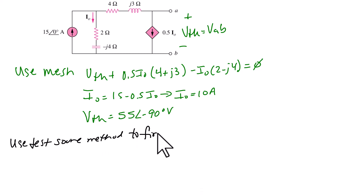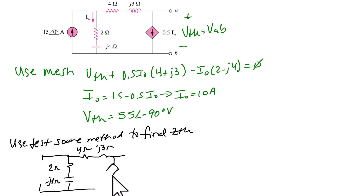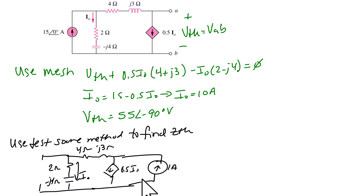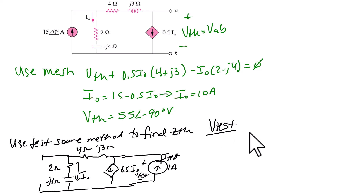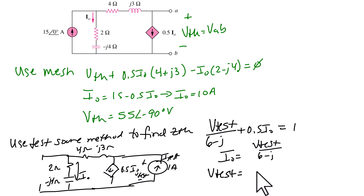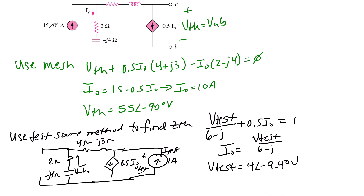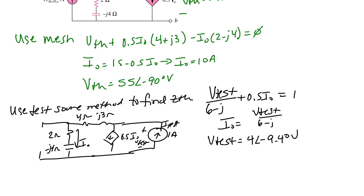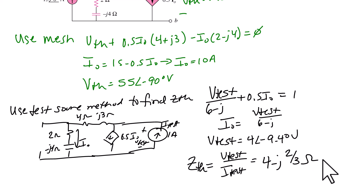Next we use the test source method to find Z Thevenin, turning off the independent current source. The circuit has a (2 minus J4) ohm branch with I_0, a J3 branch, and dependent source 0.5I_0. We add a test current source with voltage V_test across it. Using KCL: V_test/(6 minus J) + 0.5I_0 = 1, with constraint I_0 = V_test/(6 minus J). Solving gives V_test = 4 angle negative 9.4 degrees, so Z Thevenin in rectangular form = 4 minus J(2/3) ohms.